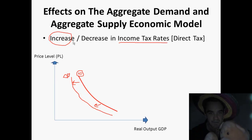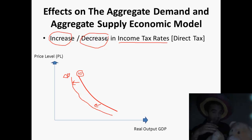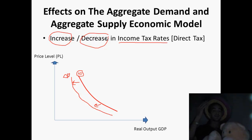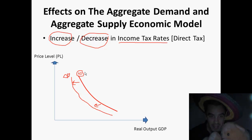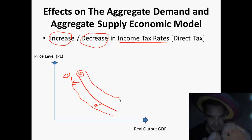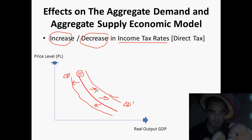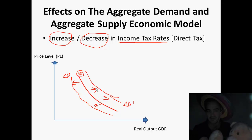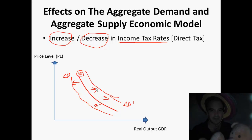If there's a decrease in our income tax rate, that's completely the opposite. We now have more money to spend — or consume. AD is going to increase because total consumption will increase with a decrease in income tax rates. Label it AD1 — boom. Please make a genuine effort to make your curves look pretty. Label your AD.